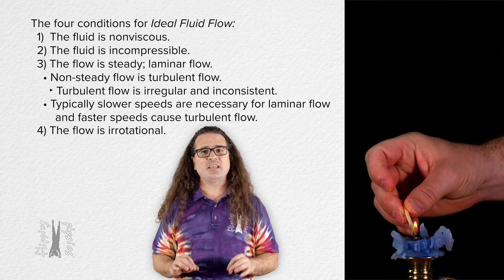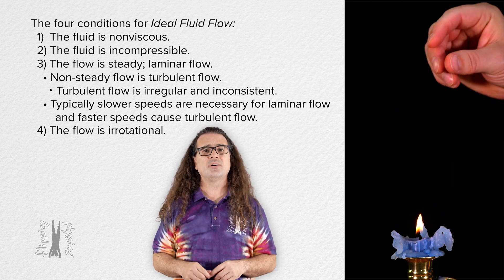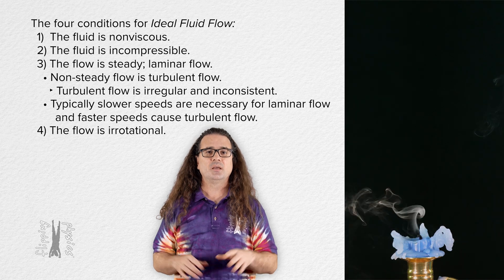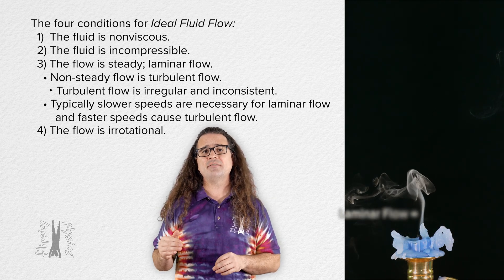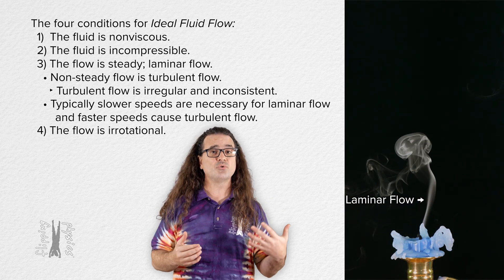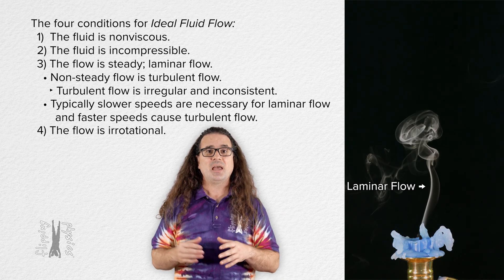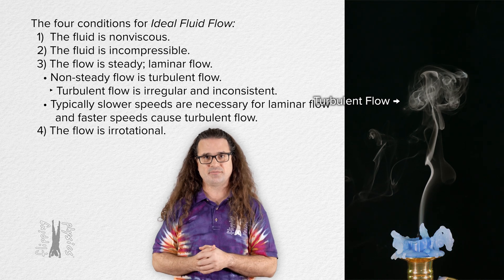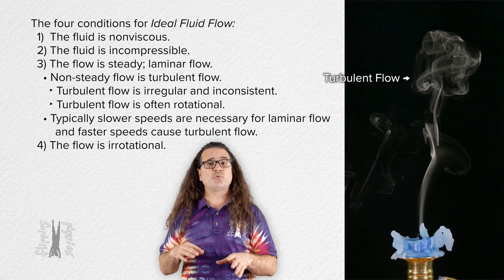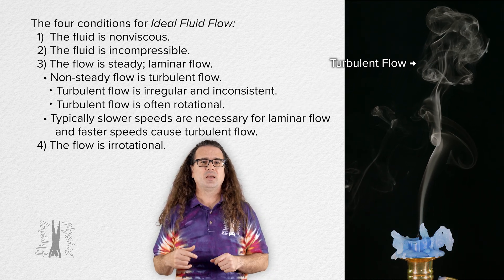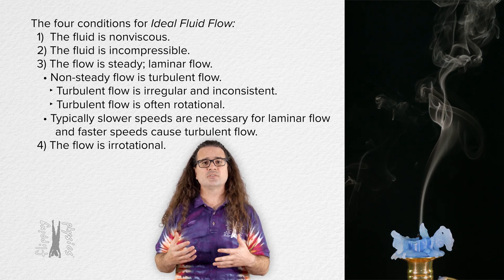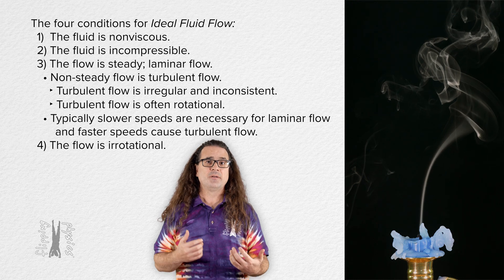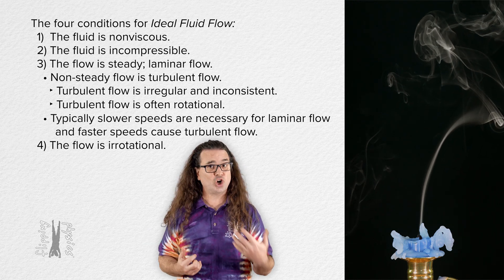A common example which shows both laminar flow and turbulent flow is the smoke which rises from a recently extinguished candle flame. The smoke which is right above the candle wick shows laminar flow. You can see it is smooth and steady flow. And the smoke above that is showing turbulent, irregular, and inconsistent flow. Turbulent flow is also often rotational as well. As the smoke rises, the speed of the smoke increases. Where the smoke is lower and moving more slowly, it is laminar flow. Near the top, where the smoke is moving more quickly, it is turbulent flow.